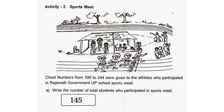Activity 2 - Sports Meet: Chess numbers from 100 to 244 were given to the athletes who participated in Rajamali Government UP School Sports Meet. A. Write the number of total students who participated in the Sports Meet.